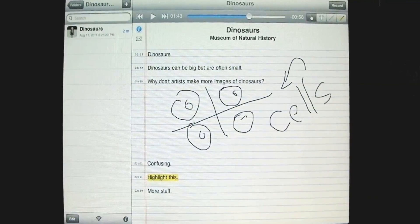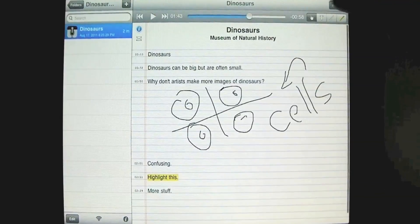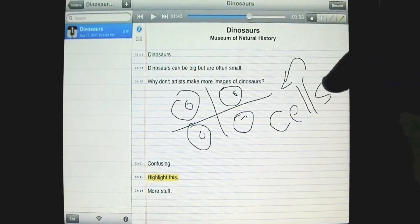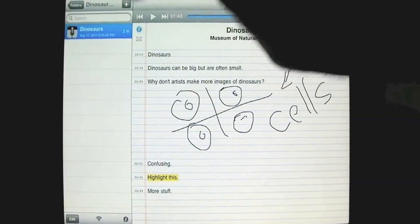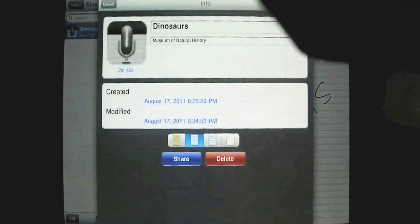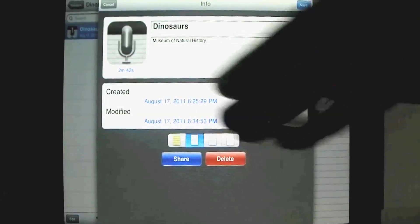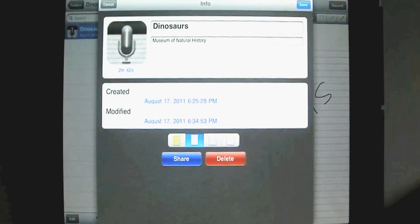Now, a couple other things. We want to share this. So here we are again with the document that we created. There's only two more little buttons on here, so you know we're about done. So here's the information button on the actual document, and we have Dinosaur's location, Museum of Natural History. It was created at this time, and it was last modified at this time. So we're getting close to doing everything we could possibly do.